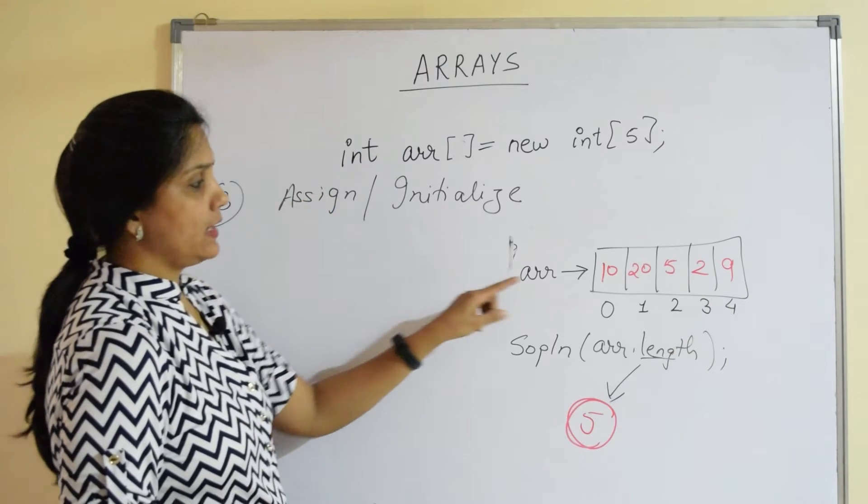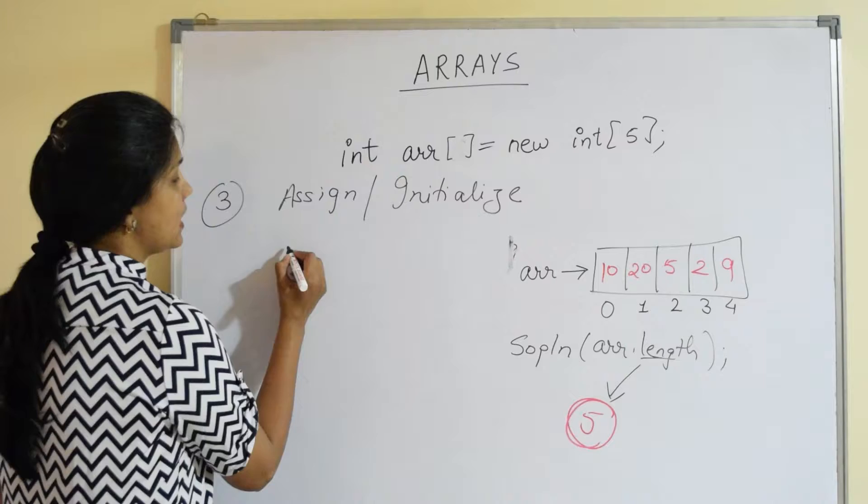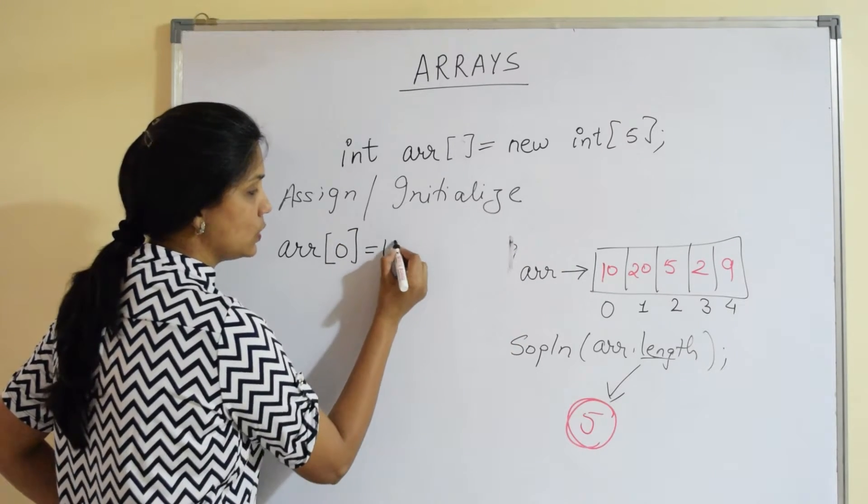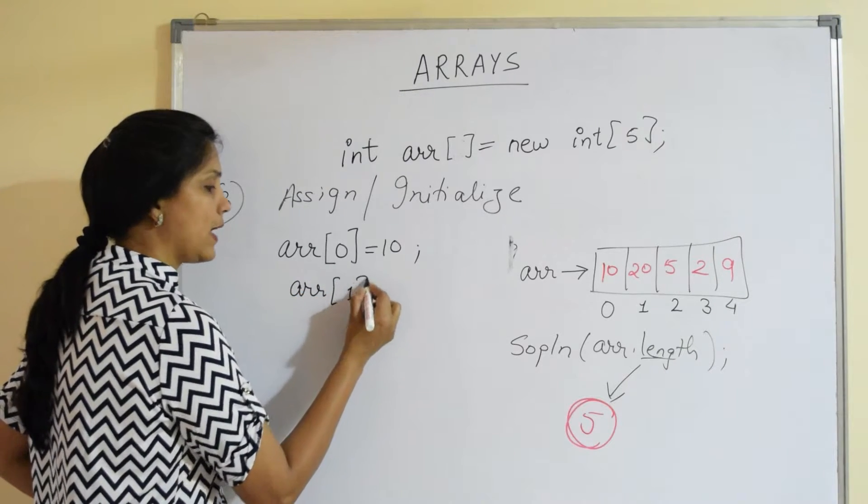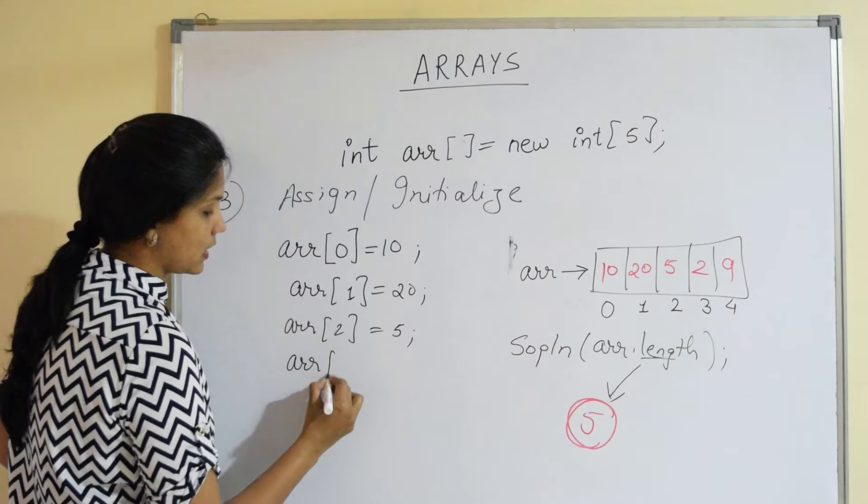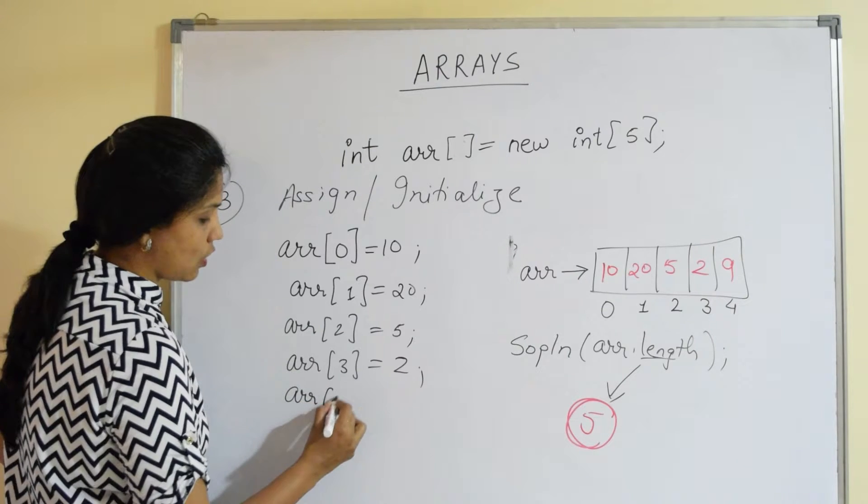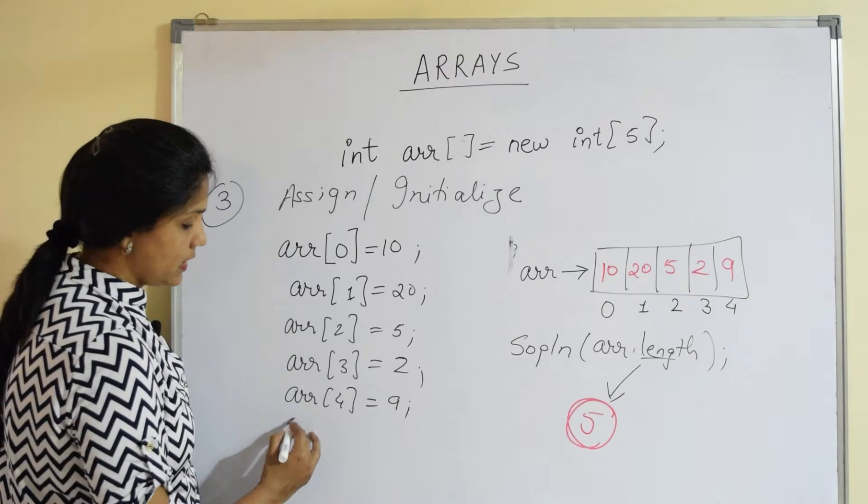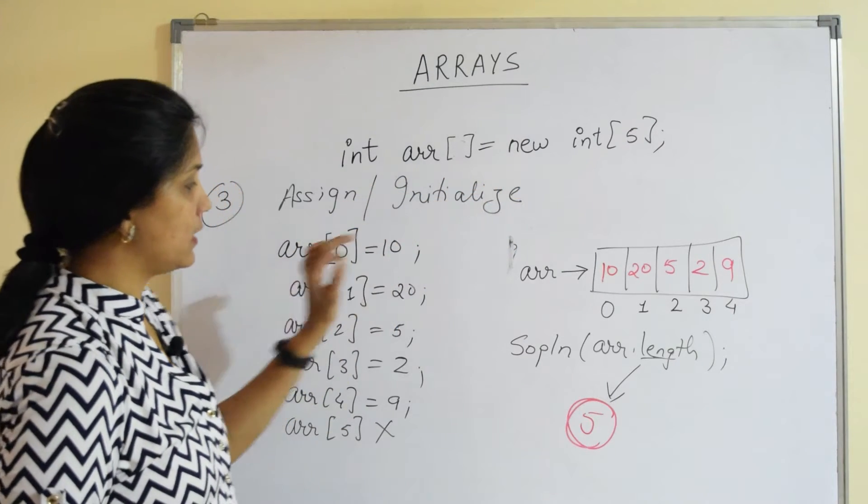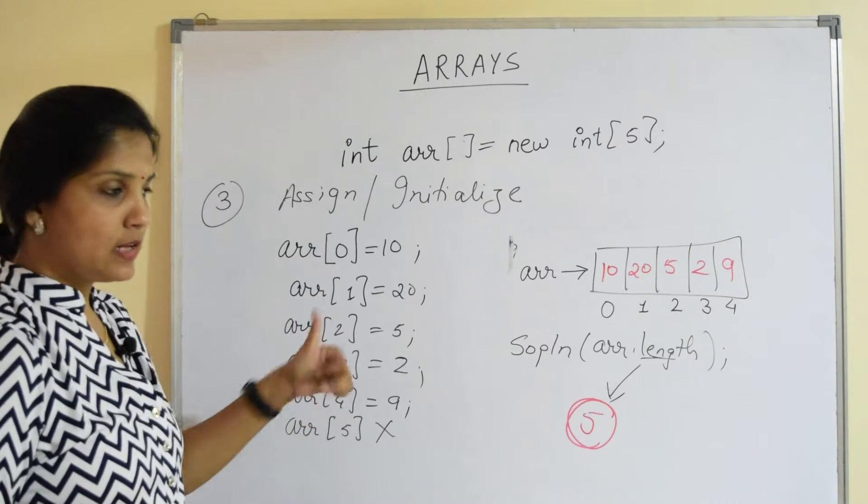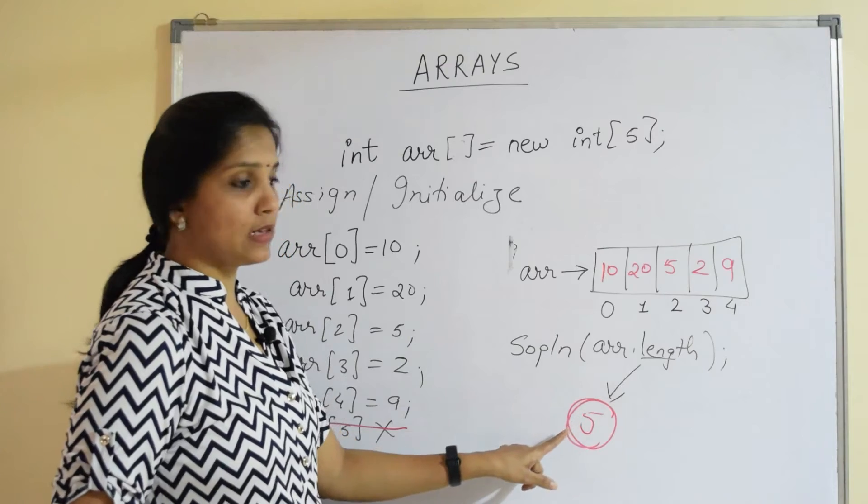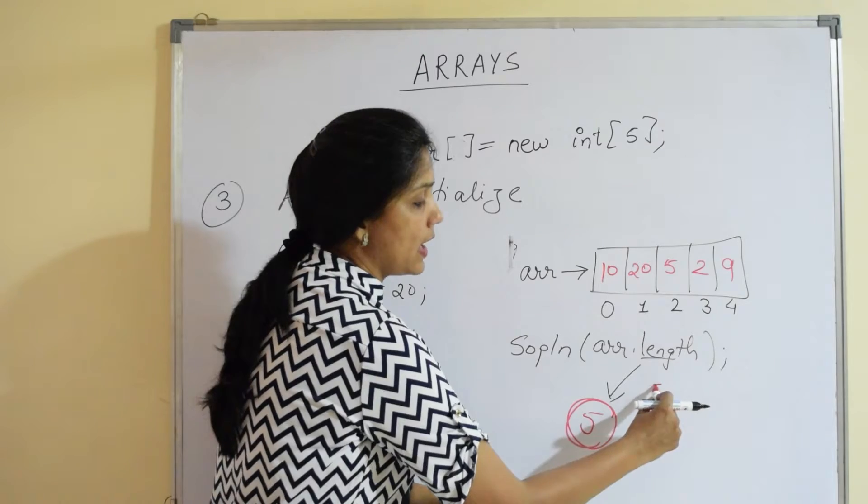So to do it, I want to assign value 10 at index 0. How do I do that? I have the array variable arr square bracket, I specify the index where I want to assign the value equals 10. Then I say arr of 1 equals 20, arr of 2 equals 5, arr of 3 equals 2 and arr of 4 equals 9. Now if I say arr of 5 will be an error because my index starts from 0, can hold 5 elements, it goes till 4. There is no index that is 5. This gives an error. So even though the length prints the number of elements, index always goes length minus 1.